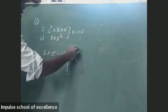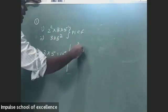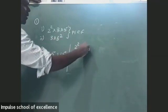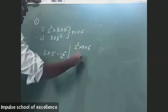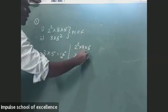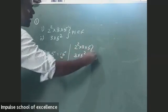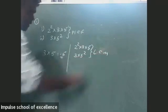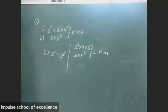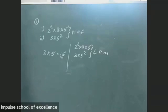Now we calculate the LCM of 2² × 3 × 5 and 3 × 5². We calculate the least common multiple.